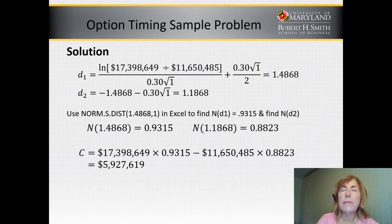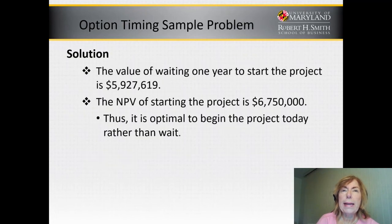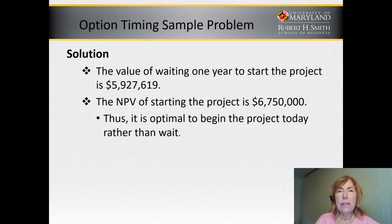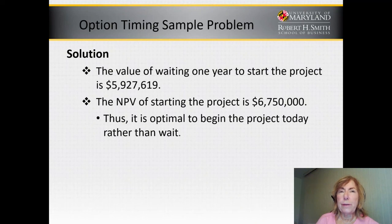We find the value of this call is worth $5,927,690. So if we wait a year, the project is worth $5,927,619. If we start now, the NPV of the project is $6,750,000. So we want to begin the project now. Not every project that has the option to delay should you exercise that option. If we are given a standard deviation and a risk-free rate, we can value the option to delay using Black-Scholes.